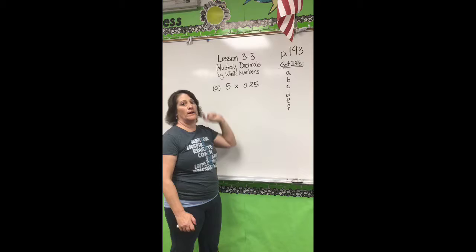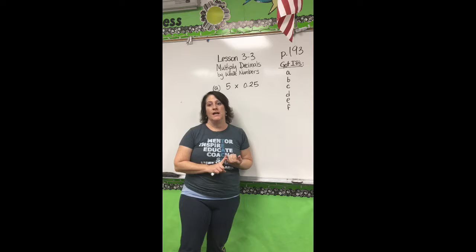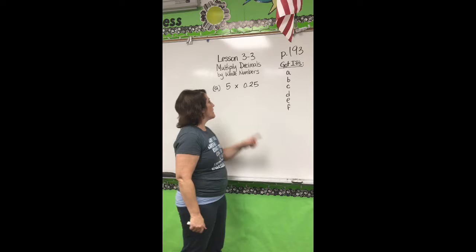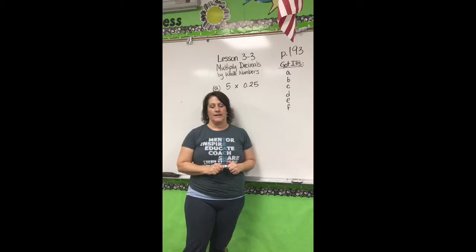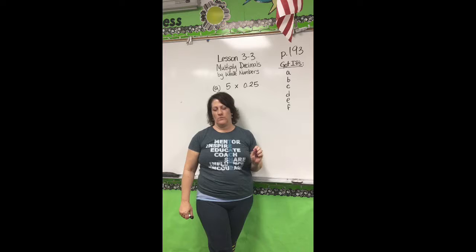I'm going to jump right into the Got It so we can get started because it's just multiplication. There are a couple of things I want to talk to you about — estimating to check for reasonableness — so let's get into it. We're going to round any partial numbers to a whole number, and I'm going to explain why in a moment, but let's go ahead and do that first step.